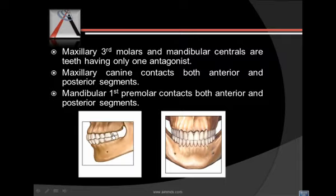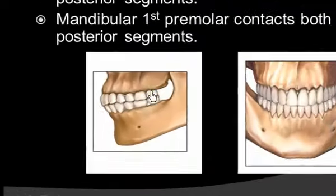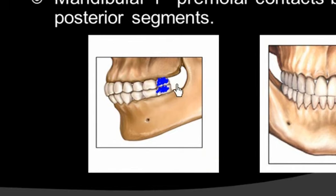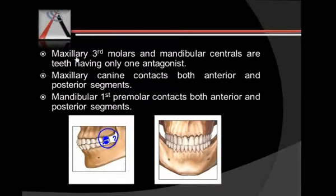However, if we consider the maxillary third molar, by the rule it should contact the same-name tooth on the mandible plus one tooth distal to it. It contacts the mandibular third molar, but there is no tooth distal to it. That is why the maxillary third molar has only one antagonist.